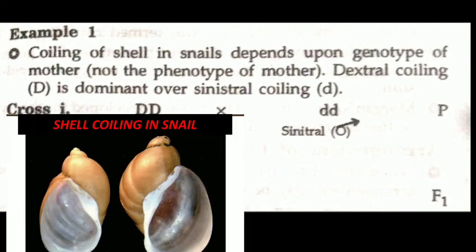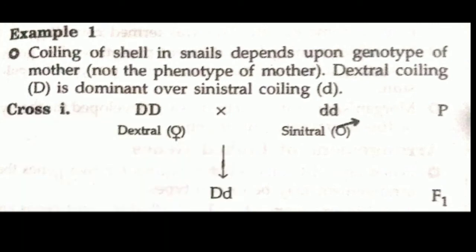When a dextral female is crossed with a sinistral male, the F1 progeny are all dextral — genotype capital D small d, which is heterozygous dominant. Then this capital D small d generation undergoes a self-cross to produce F2.